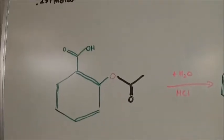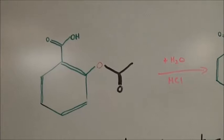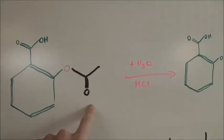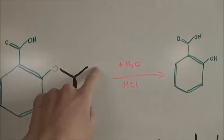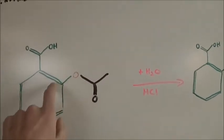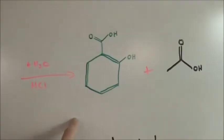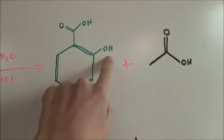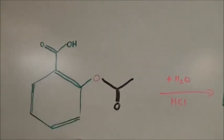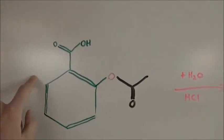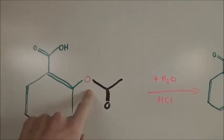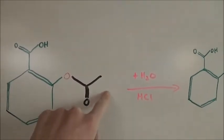Some of you might not know what an ester is. It's basically a carboxylic acid, which in this case came from the acetic acid. This is an acetyl group here. It has reacted with something that has a hydroxyl group, which would be the salicylic acid with an OH group here — a hydroxyl group — and it's formed an ester bond. So you can see that ASA here has the salicylic acid part linked by an ester bond to an acetyl group.